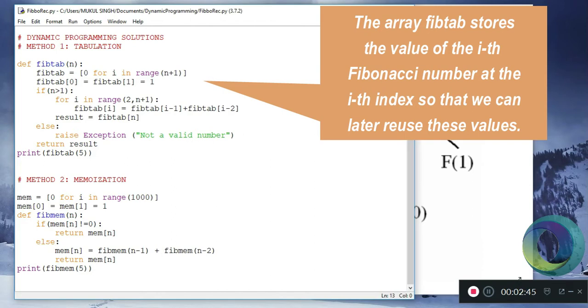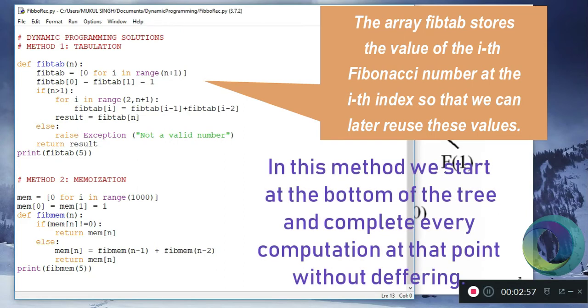Let's see how it is implemented. In this function we have an array of size n. This array will store the values of the Fibonacci numbers.